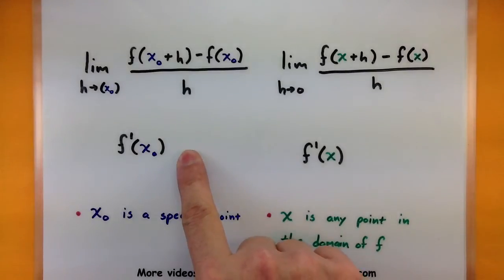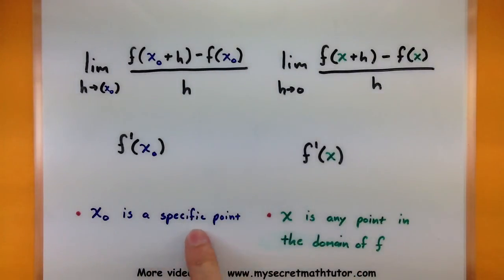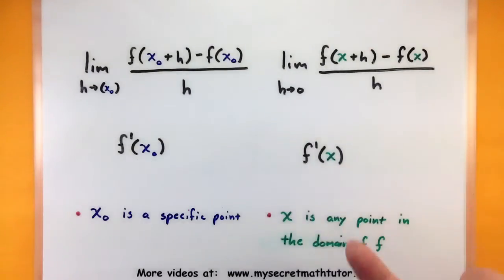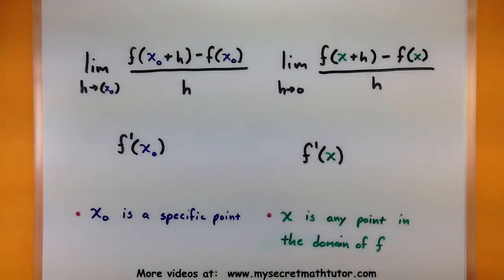When you're looking at a specific point, this little x sub 0 is in a sense fixed, and it's not changing, and it's really anchored at that point. But if you were to just replace that x sub 0 with just a general x, then you're allowing x to be anything, any point in the domain of f.